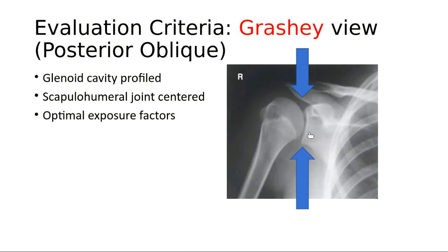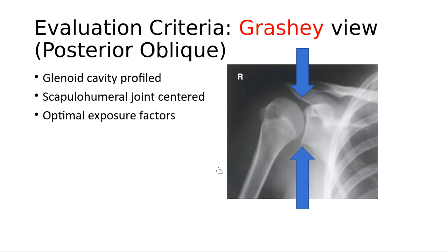A perfect Grashey view shows a nice open joint space — you can see the space is not very big but completely open from top to bottom. The glenoid cavity or glenoid fossa is in profile, the scapulohumeral joint is centered, and the exposure factors are excellent. The only issue again is missing the sternal end of the clavicle — this should be collimated 10 by 12 crosswise, not lengthwise. The exposure is made on suspended respiration.